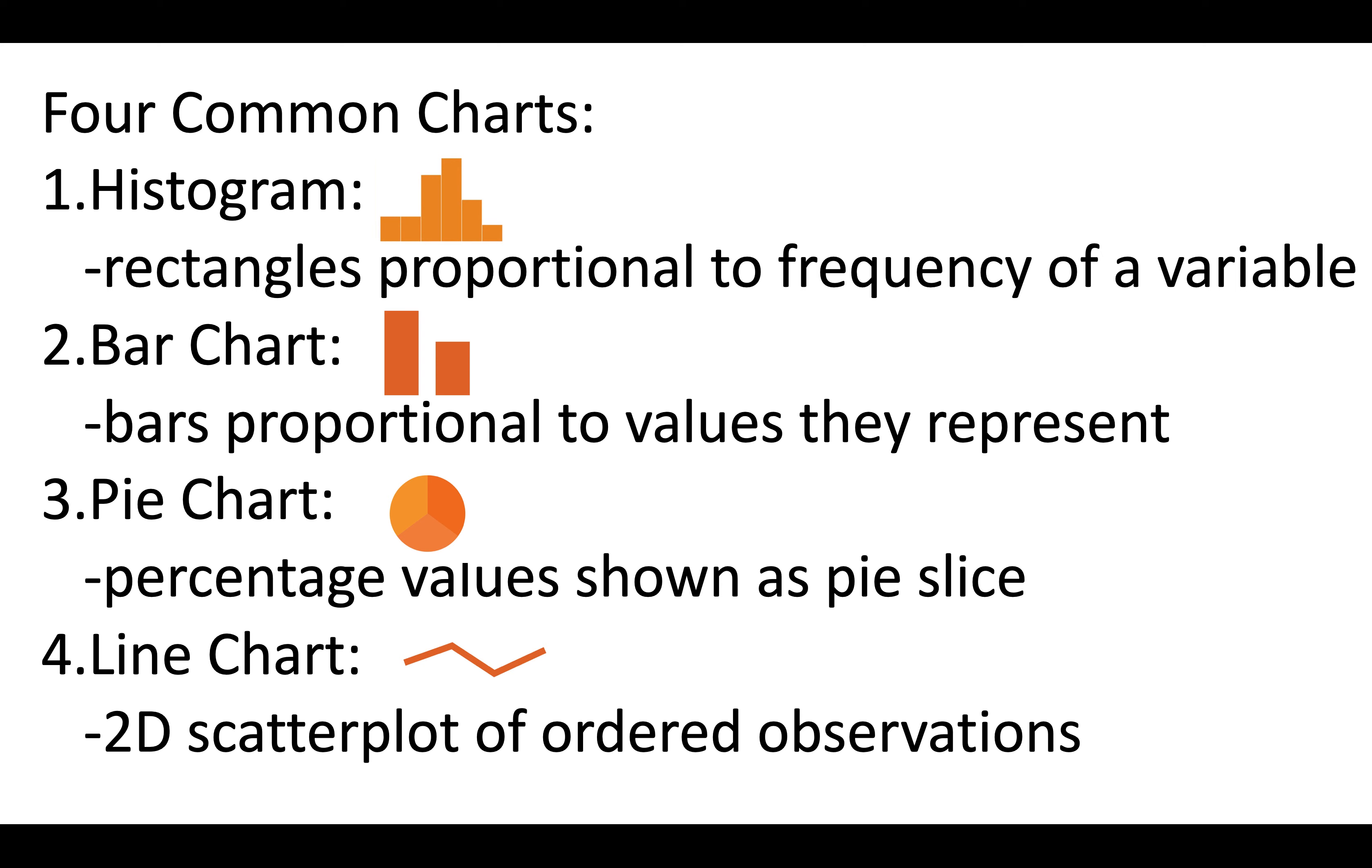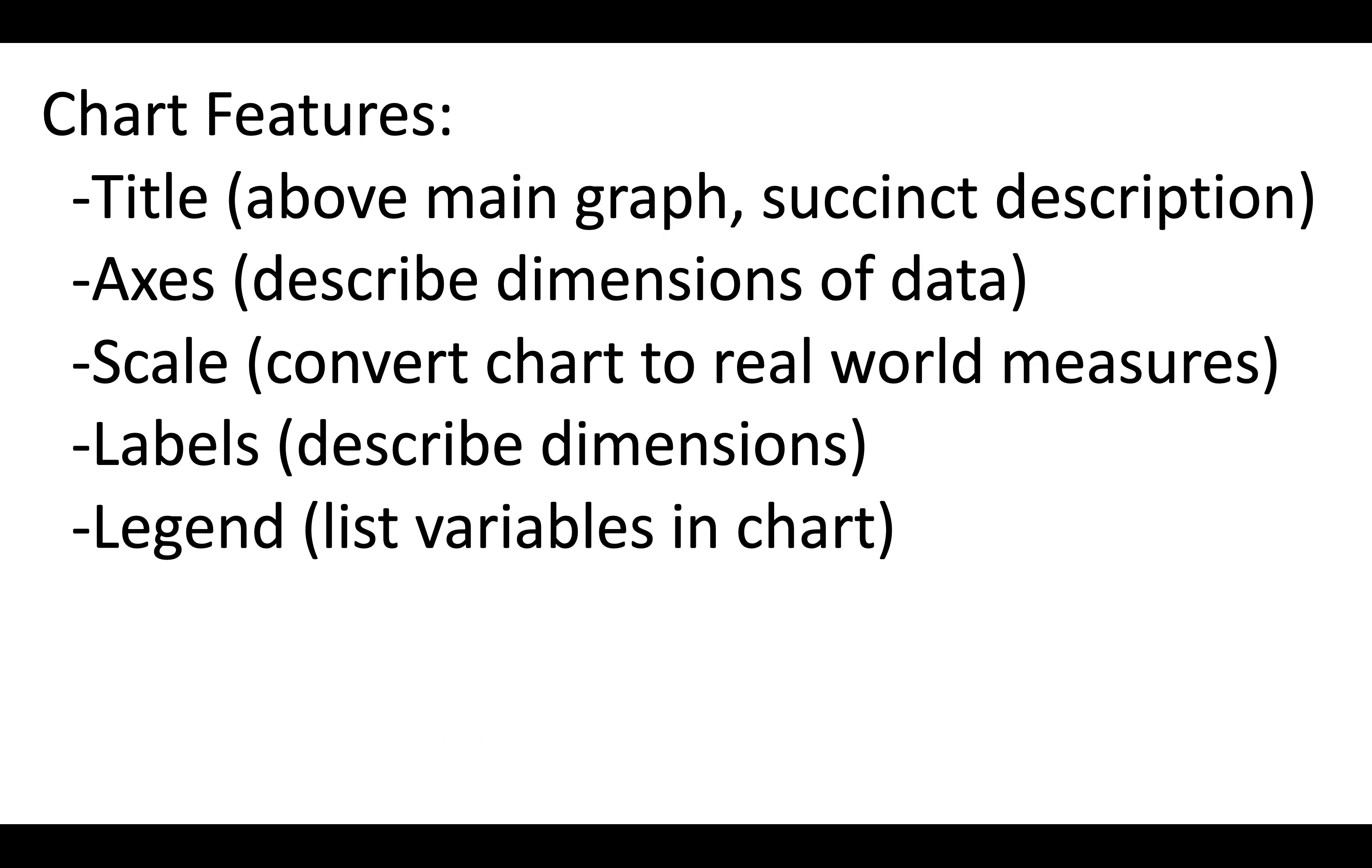A pie chart is where the circle of the pie is 100 percent, and various slices represent a percentage value of that overall pie. And finally, a line chart - that's a two-dimensional scatterplot of ordered observations.